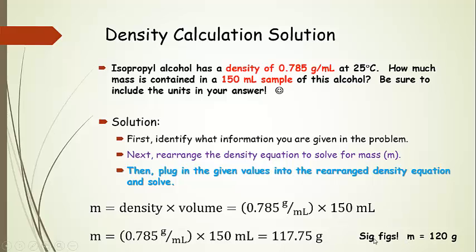Now, we need to determine how many sig figs we need. So 0.785, this 0 is before the decimal point. This is not significant, so 1, 2, 3 sig figs. This 150 milliliters does not have a decimal point right here, so this 0 is not significant. So 1, 2 non-zero numbers, and so that is 2 sig figs. So our final answer needs to have 2 sig figs. So we're going to round this.